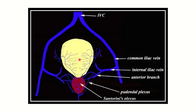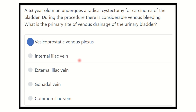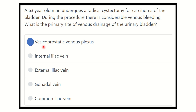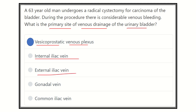The urinary bladder cannot drain directly into the common iliac vein, external iliac vein, or internal iliac vein. So our answer is that the primary site of venous drainage of the urinary bladder is the vesico-prostatic venous plexus. The other options — internal iliac vein, external iliac vein, and common iliac vein — are all too far away from the urinary bladder. The gonadal vein drains the gonad, not the urinary bladder.